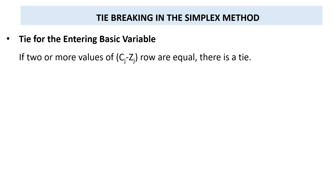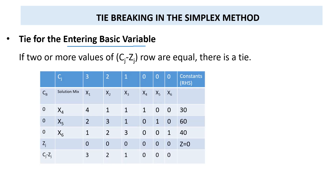Before moving to degeneracy, let's have some idea about tie-breaking in the simplex method. There are two types of ties in the simplex method: there is a tie for the entering basic variable, and there is a tie for the leaving basic variable. As you remember from lesson 5, when we solve the maximization linear programming using the simplex method, we determine the entering variable or pivot column by looking at the cj minus zj row and selecting the maximum positive value.